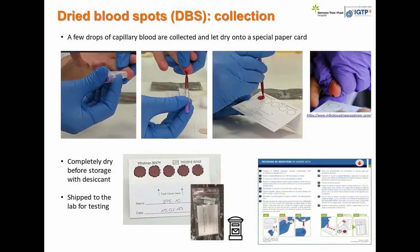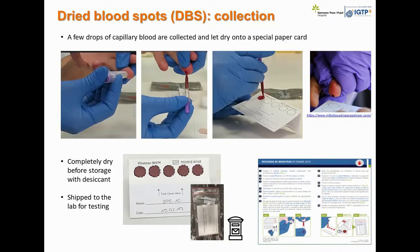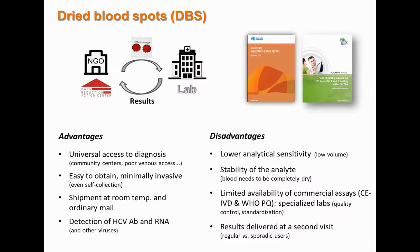Dried blood spots are a few drops of capillary blood that are collected and allowed to dry on special paper cards. We measure the appropriate volume of blood using minivets or EDTA capillaries, though you could also directly transfer the drops of blood into the paper card. The most important thing is that the blood needs to be completely dry before storage, and we store it with a desiccant — we use one with a humidity indicator for quality purposes. These samples are stable and can be shipped to the laboratory through regular mail.